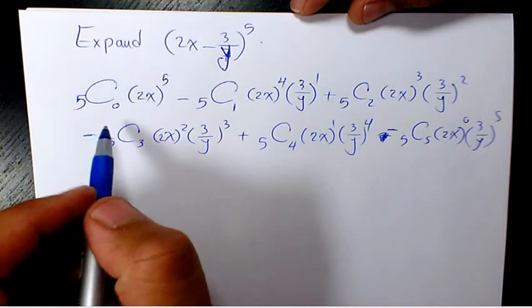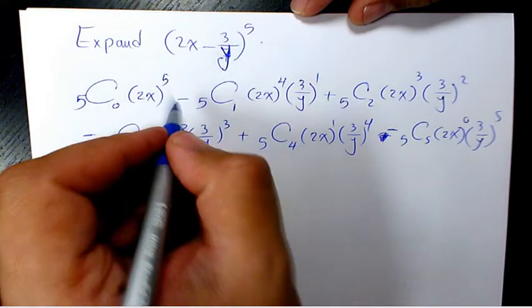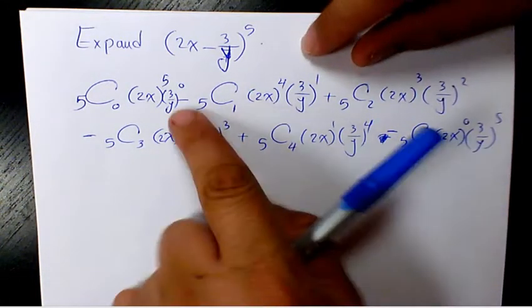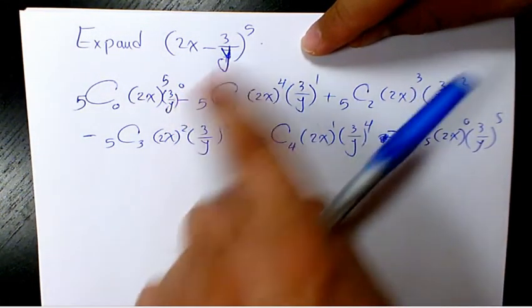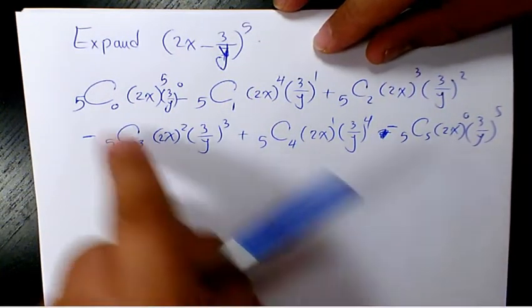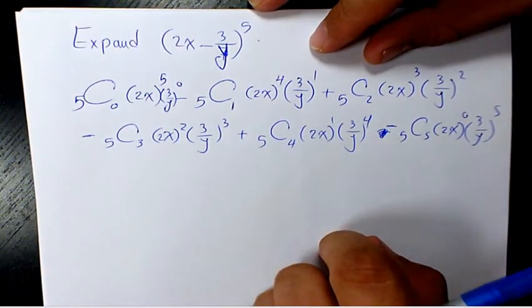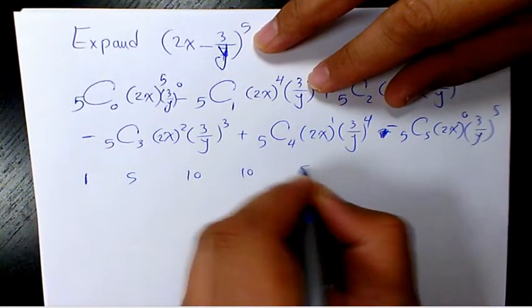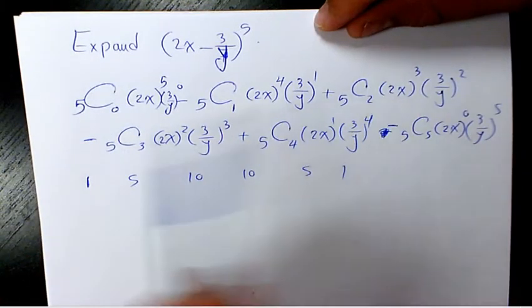So basically the first one is 3 over y to the power of 0, which is going to be 1, so I don't need to write it. But in order to show that the exponent of the second term is going up and exponent of the first term is going down, we need to use Pascal's triangle to find out the coefficients, which will be 1, 5, 10, 10, 5, 1.